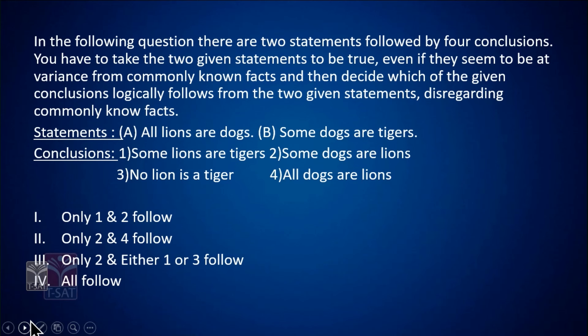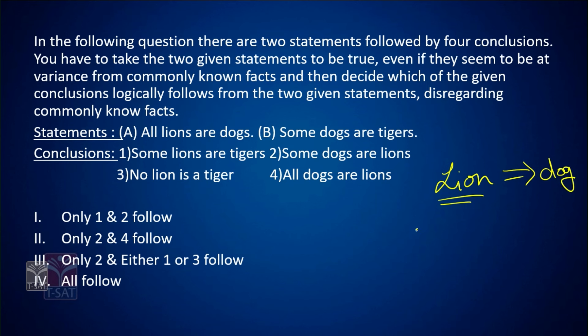In the following question, there are two statements followed by four conclusions. Take the statements to be true even if they seem at variance from commonly known facts, and decide which conclusions logically follow. Statement A: All lions are dogs. Statement B: Some dogs are tigers. The conclusions are: (1) some lions are tigers, (2) some dogs are lions, (3) no lion is a tiger, (4) all dogs are lions.